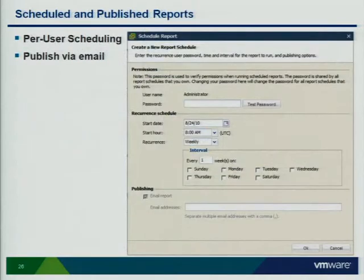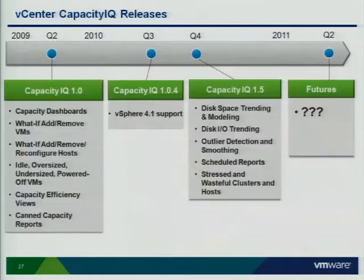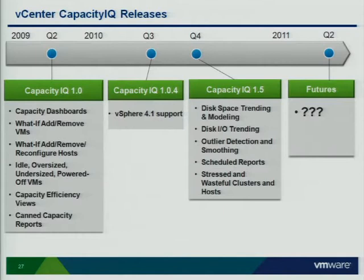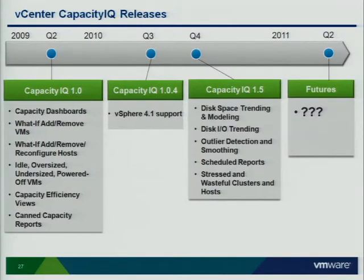The report scheduling screenshot shows you can specify the start date, time, and day of the week for reports to run. If you have an email server set up, you can send the reports to specific email IDs. To summarize: 1.0 released last year had dashboards, what-if modeling, capacity efficiency views, and pre-canned reports. With 1.0.4, which supports vSphere 4.1, you can upgrade if you already have 1.0. Version 1.5 is scheduled for end of year — we are starting the private beta and it should be out by then.